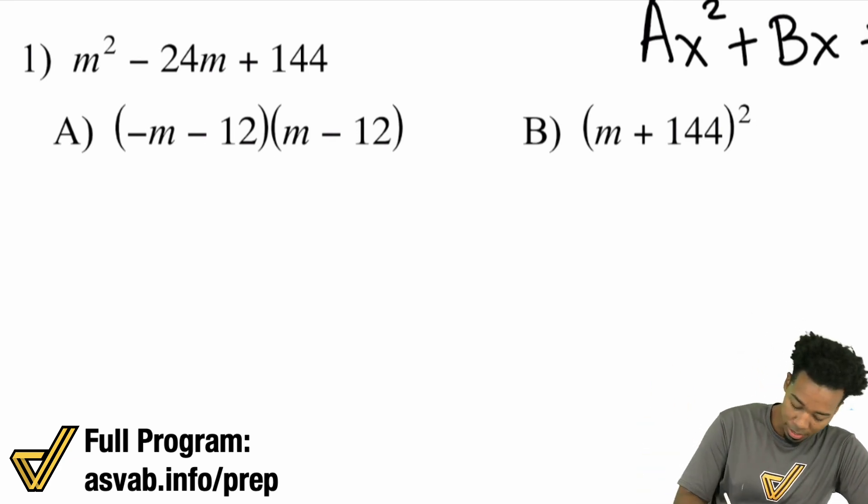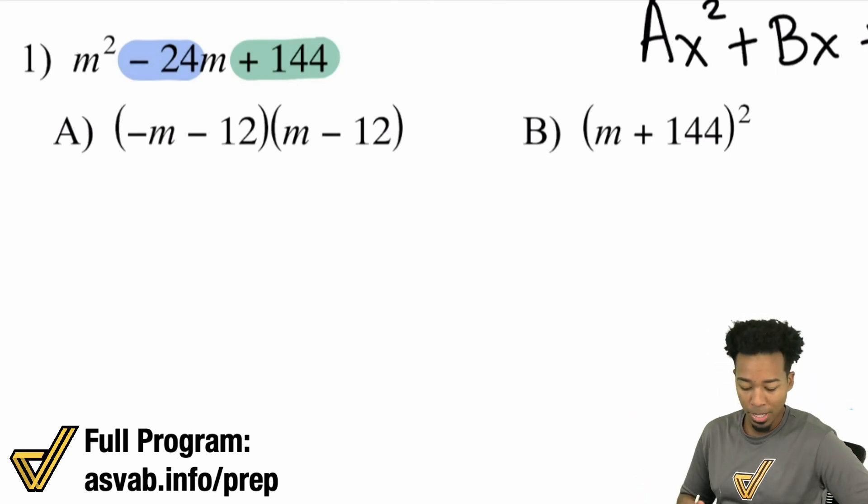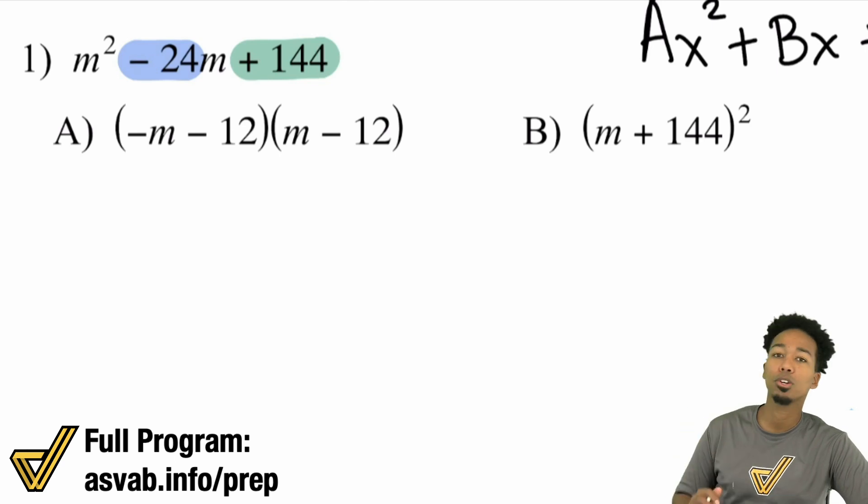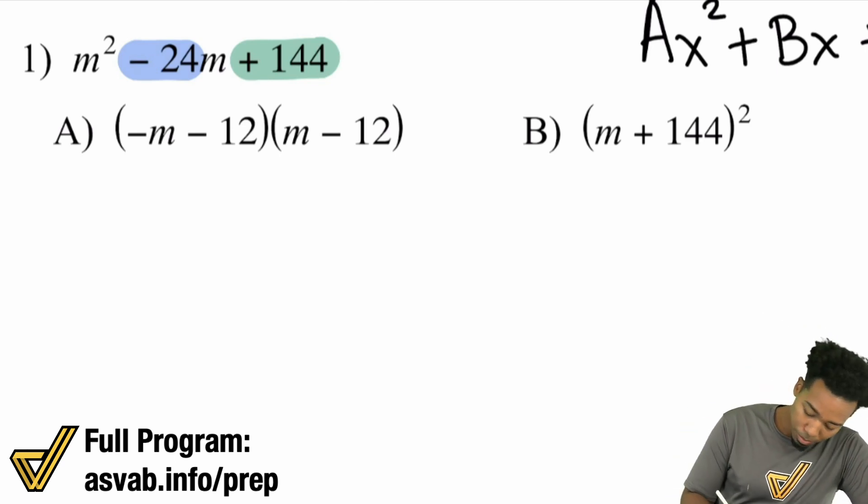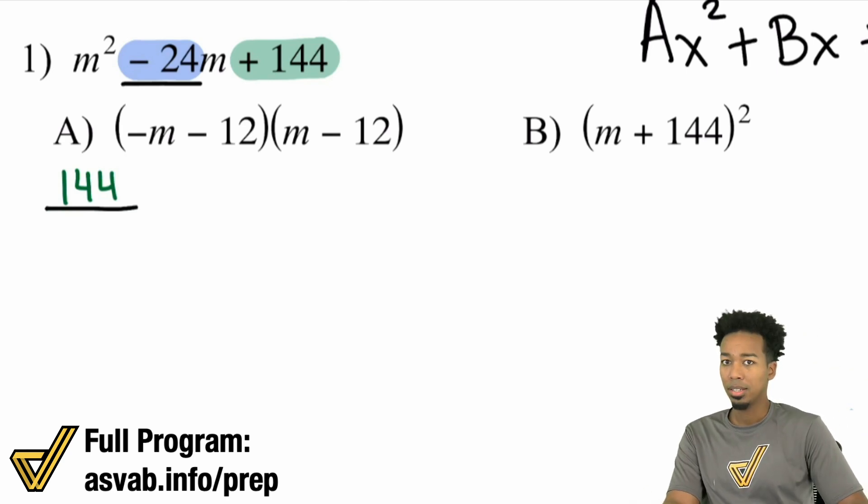The rule was, find the factors of C that add up to B. If you watched the previous video, did the worksheet problems, the speed drills, you know exactly what I'm talking about. Now, I'm going to show you what a perfect square trinomial is. So what are the factors of 144? Well, the factors of 144 that add up to a negative 24, we got to think about that.